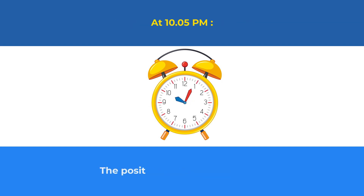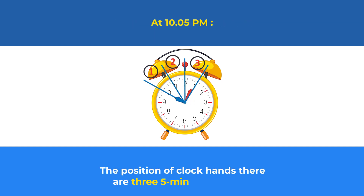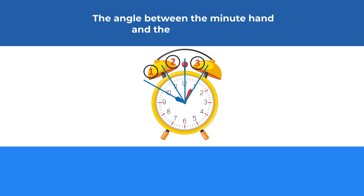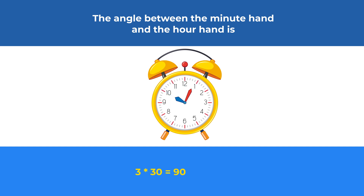At 10:05 pm, there will be three 5-minute sections between the hands on the clock. So the angle between the minute hand and the hour hand will be 3 multiplied by 30, which equals 90 degrees.